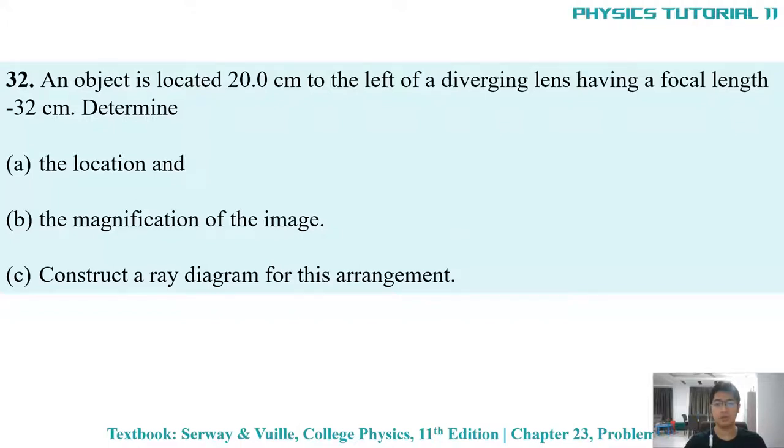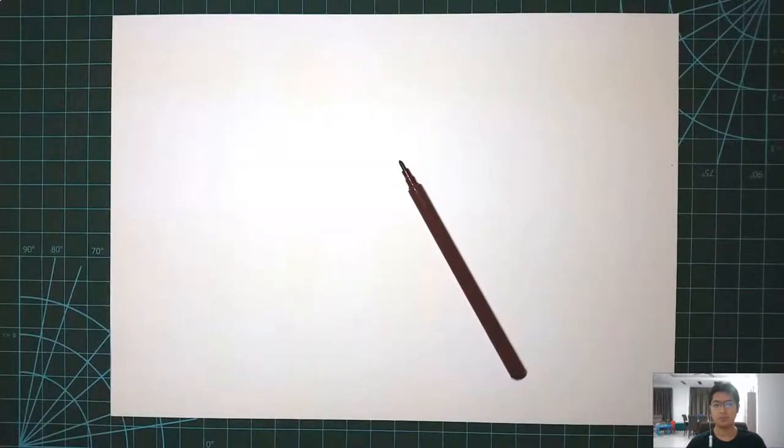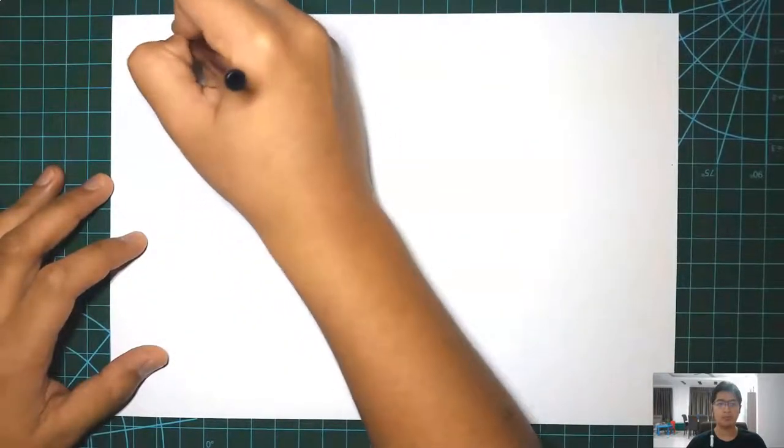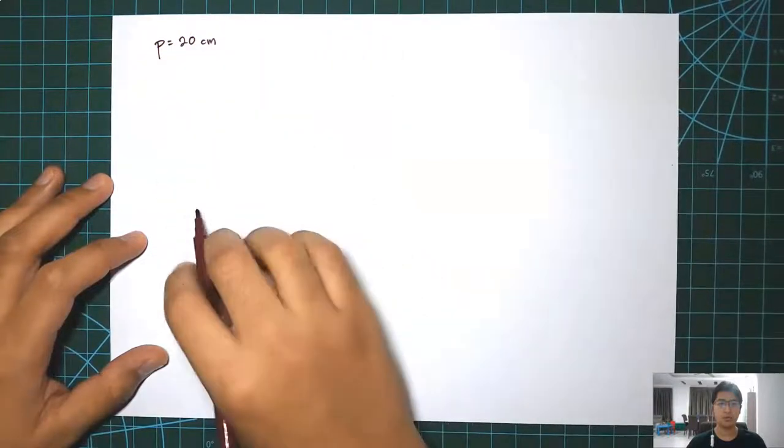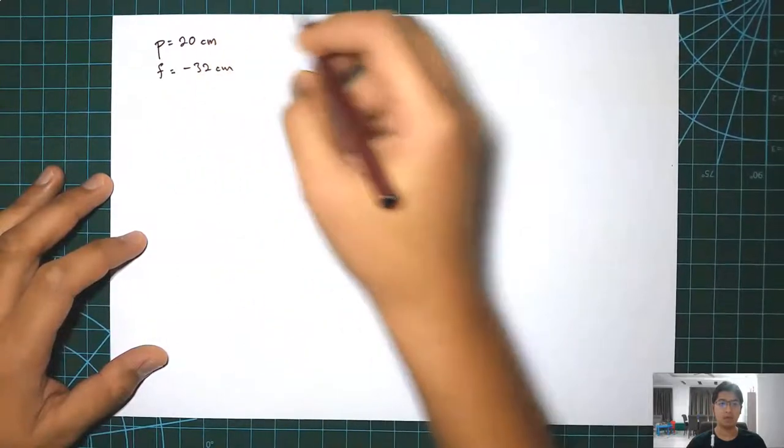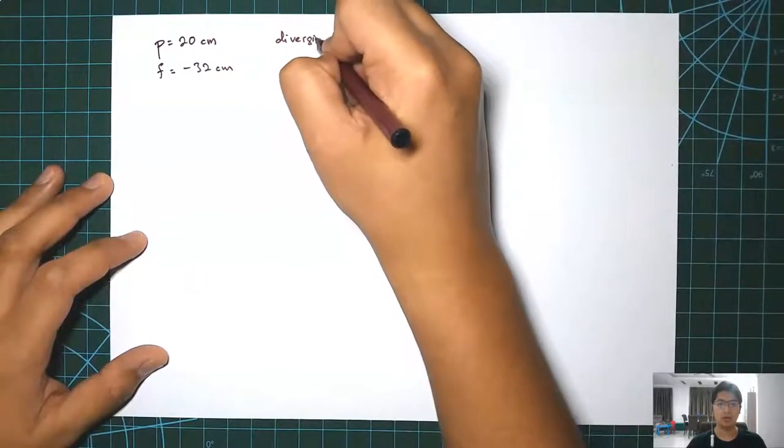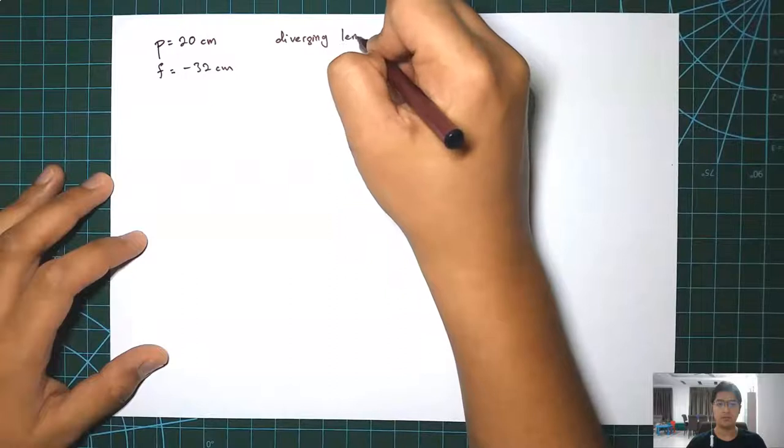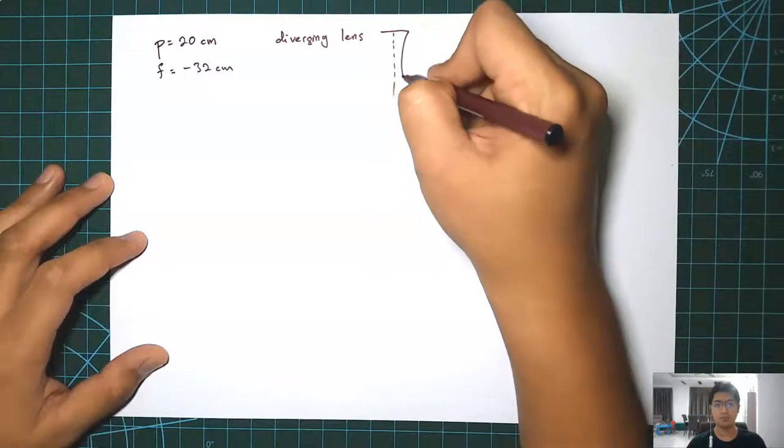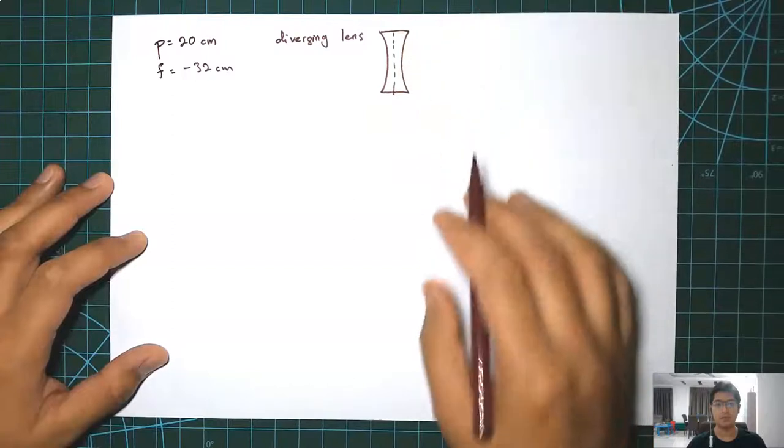So we continue with the solution. From the question, we know that the object distance is 20cm and then the focal length is negative 32cm for diverging lenses. So this is the shape of the diverging lens.